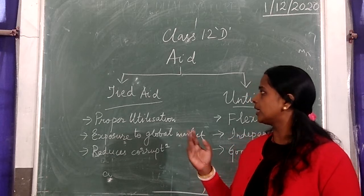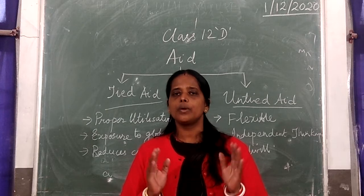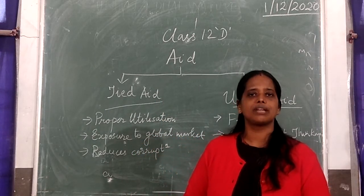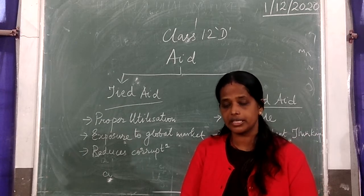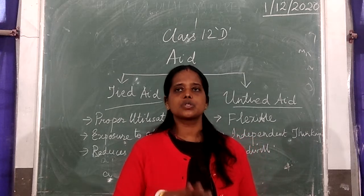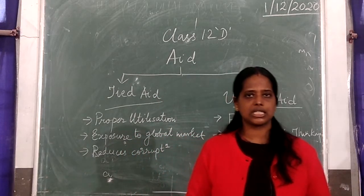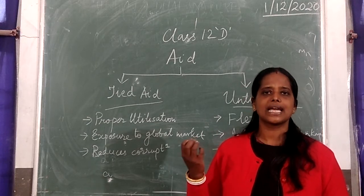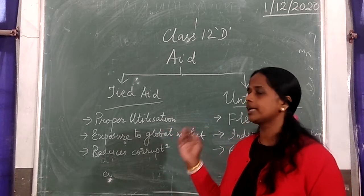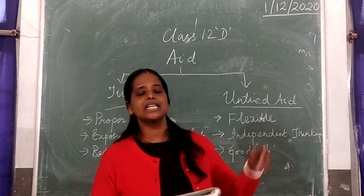With untied aid, goodwill is maintained between the two countries, unlike under tied aid where the relationship may not be very good. When it is untied aid, the relationship between the developed and the developing country is very good. Lastly, untied aid allows the funds to be employed more efficiently.